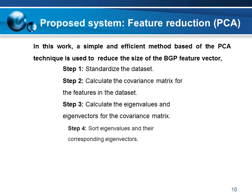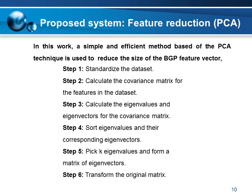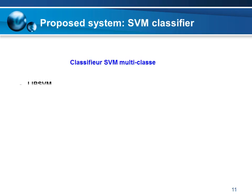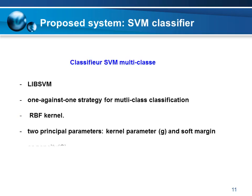A simple and efficient method based on the PCA technique is used to reduce the size of the BGP feature vector. The following steps outline the computational details: step one, standardize the data set; step two, calculate the covariance matrix for the features; step three, calculate the eigenvalues and eigenvectors for the covariance matrix; step four, store the eigenvalues and their corresponding eigenvectors; step five, pick k eigenvalues and form the matrix of eigenvectors; and finally, transform the original matrix. In this research, we have chosen the Support Vector Machine method for the classification stage.